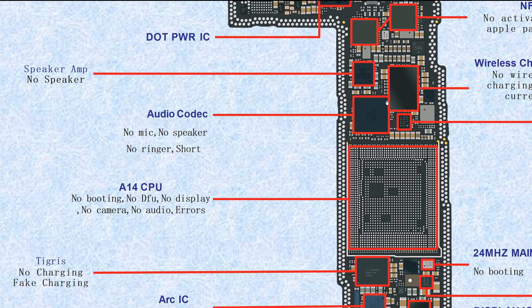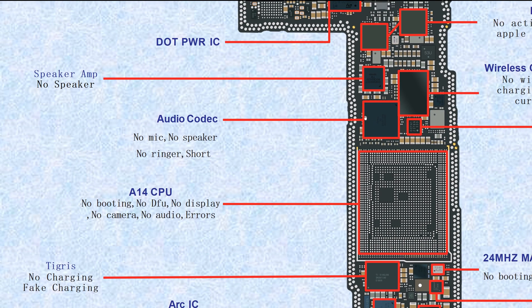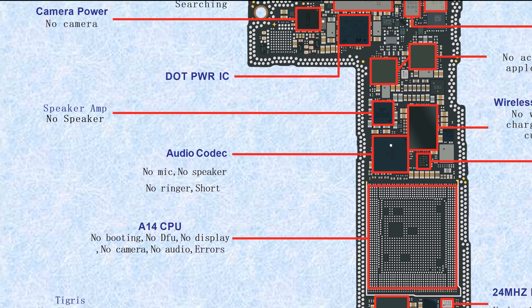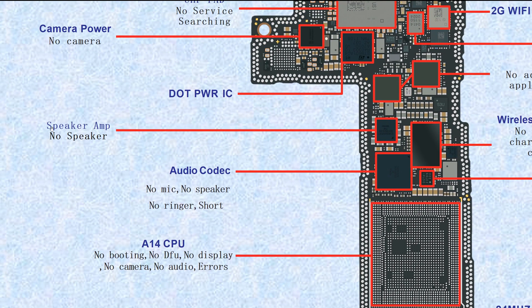This one is the audio codec — we sometimes call it audio IC, sometimes codec IC, they are the same. If broken, it causes no microphone, no speaker, no ringer, or sometimes a short. This one is the speaker amplifier — if broken, it causes no speaker.